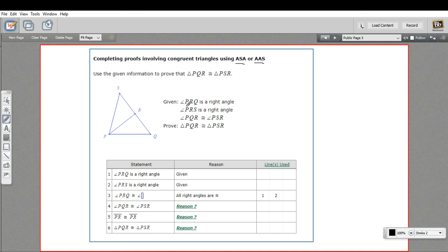This one says, given PRQ is a right angle, so PRQ, that's this angle, and PRS is a right angle. And PQR, that's this angle right here, is congruent to PSR, that's this angle here. Okay. So we've got our two angles.